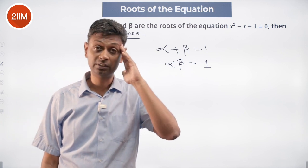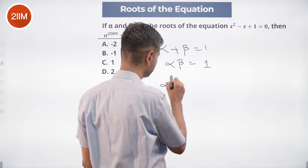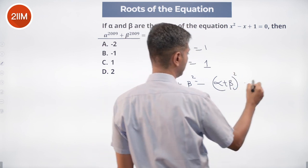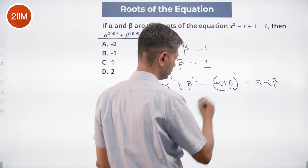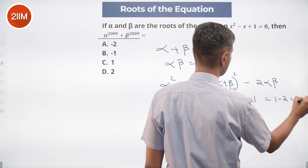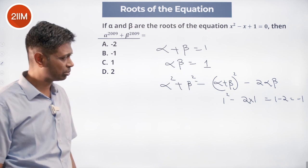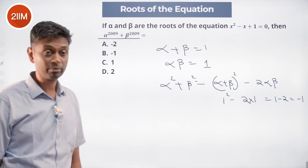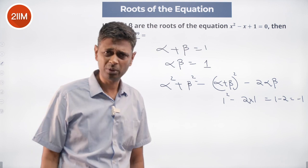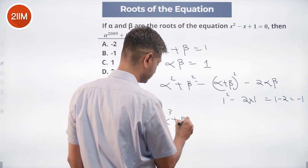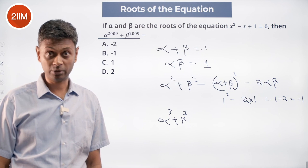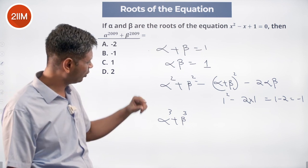alpha^2009 + beta^2009 is incredibly tough to compute directly. So let's first find alpha² + beta². This equals (alpha + beta)² - 2·alpha·beta = 1² - 2·1 = 1 - 2 = -1. So alpha² + beta² = -1. Now we know alpha + beta = 1 and alpha² + beta² = -1.